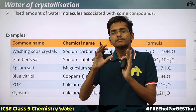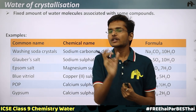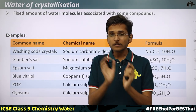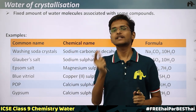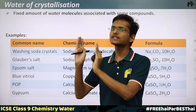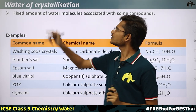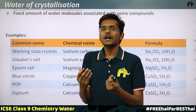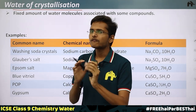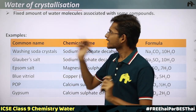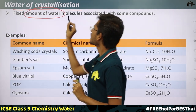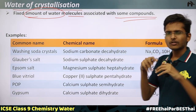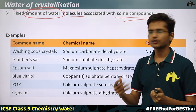Before understanding what hydrated substances are, let's first understand what is the meaning of water of crystallization, because this term will help us understand hydrated and anhydrous substances. Water of crystallization is simply a fixed number of water molecules which are associated with some compounds. Let's see the examples, then it would be much more clear.